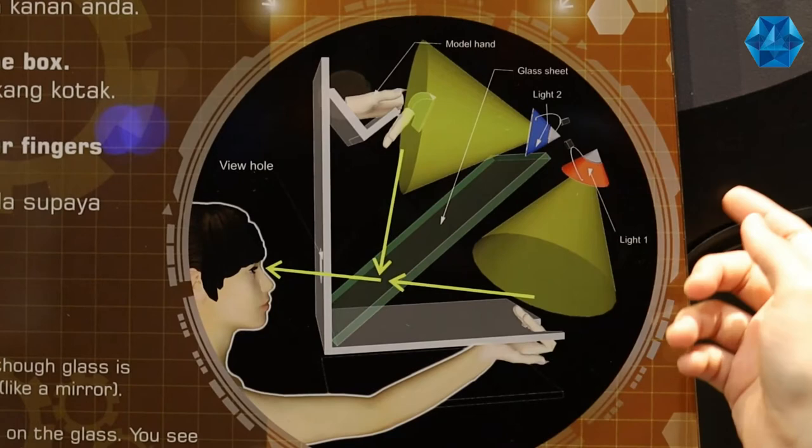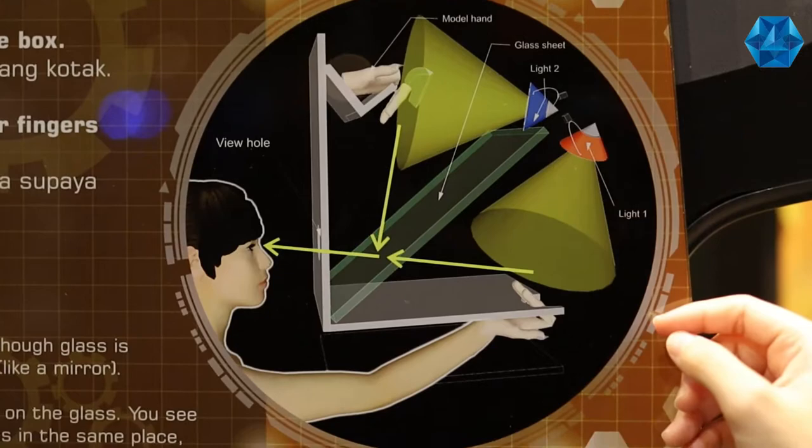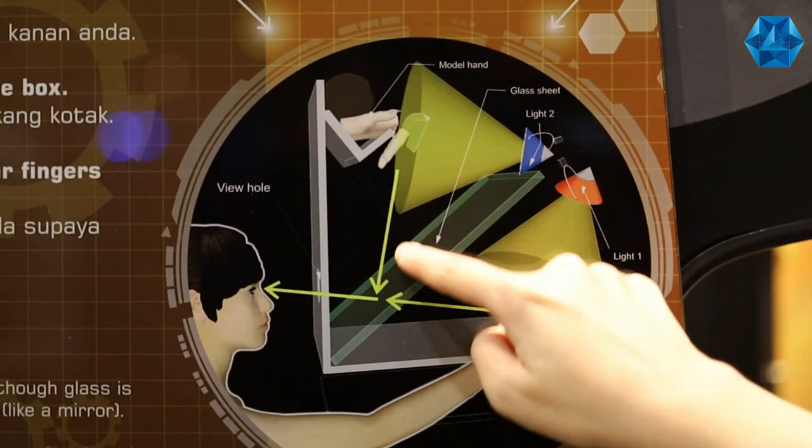Inside the box is a slanted sheet of very clean glass. Although glass is mostly transparent like a window, it also reflects light like a mirror. The lamp illuminates a hidden model hand which reflects on the glass.